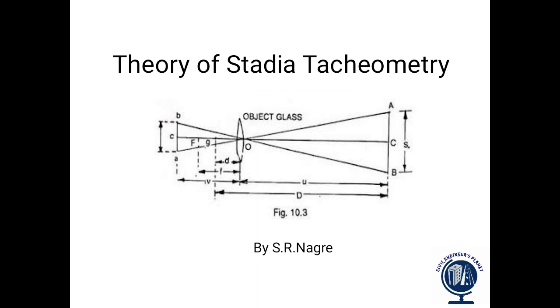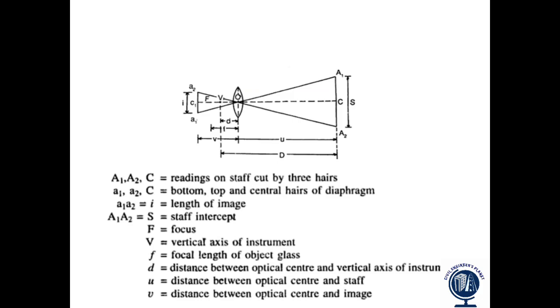First of all, we will see the terms which are present in Stadia tachometry. So let's see the terms one by one. Here you can see capital A1, capital A2, and capital C. These are the readings on the staff cut by three hairs. Small a1, small a2, and small c are the bottom, top, and central hairs of the diaphragm.